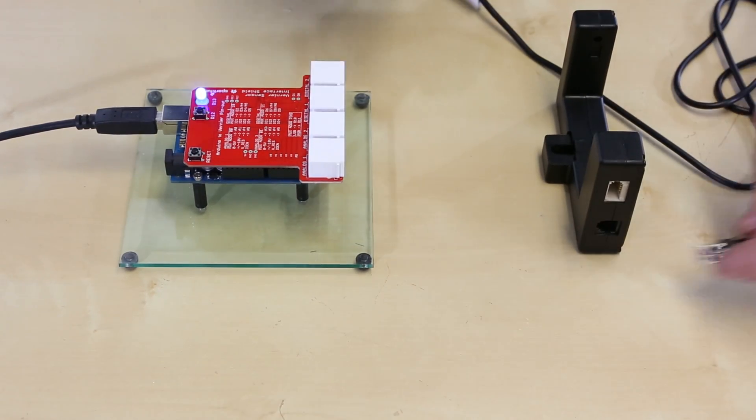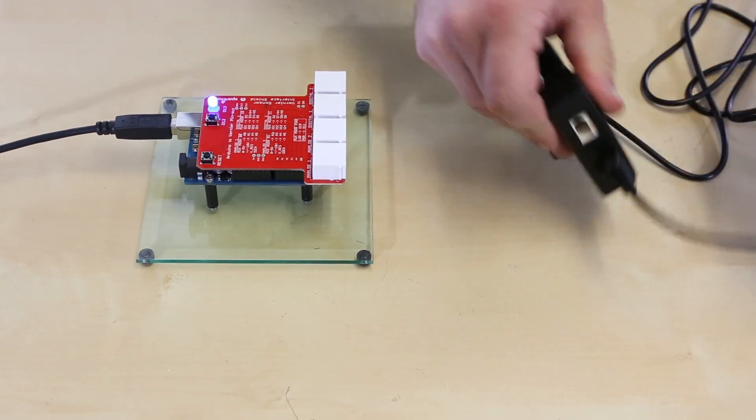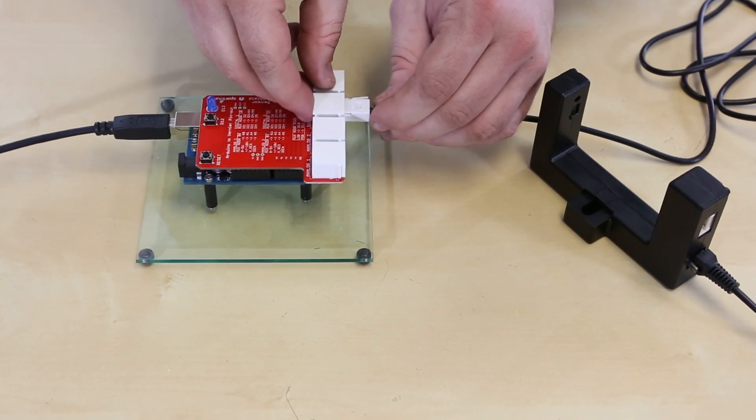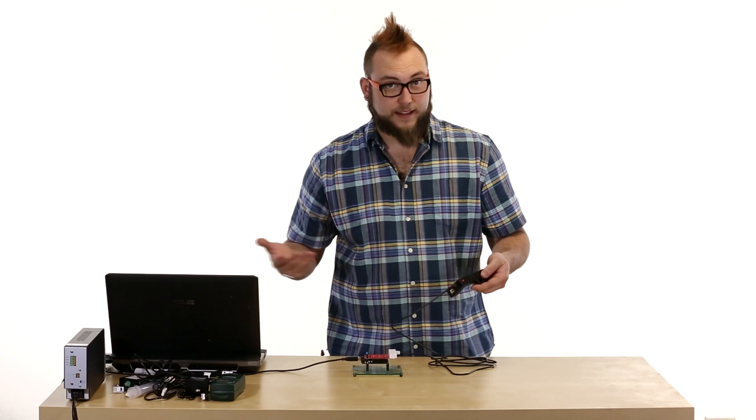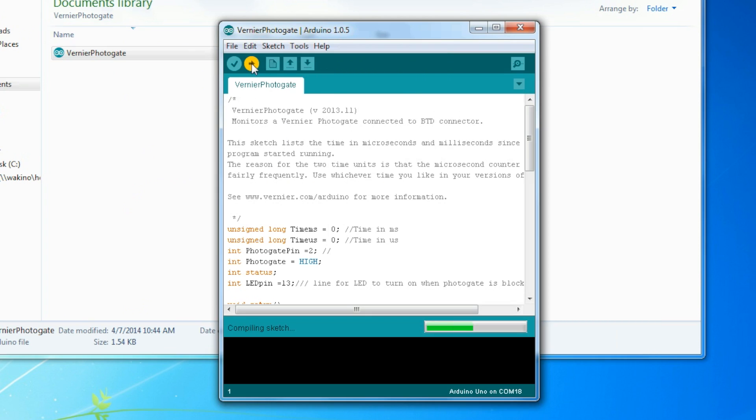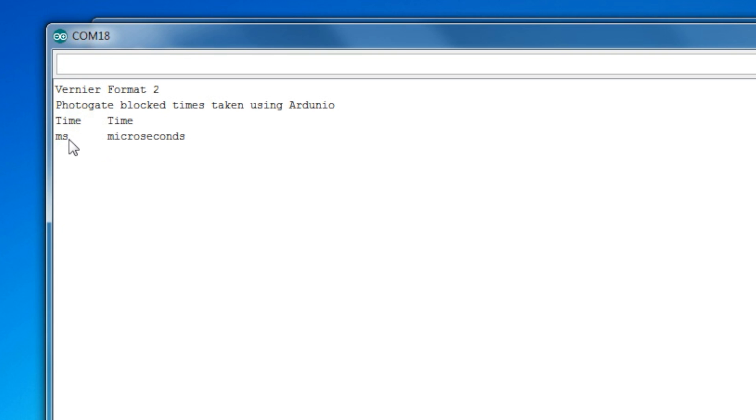First we just connect it to the shield using this cable that comes with it. It has a phone connector on one side, and then the British Telecom connector again. And this is a digital sensor, so we'll just go into digital one. And there's a red light on the sensor that will turn on to let you know that it's ready. We'll open up that demo and upload that to our Arduino. Now that we've uploaded the sketch, we can open up the serial monitor, and you'll see here that it has time in milliseconds here, and this is milliseconds since the sketch was started, and then time down to microseconds here, and this is the time at which the PhotoGate was blocked.